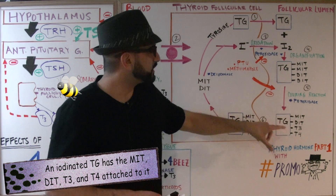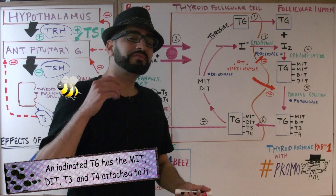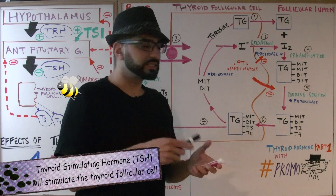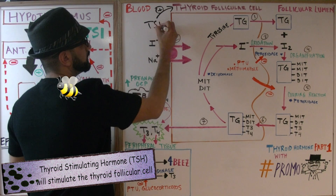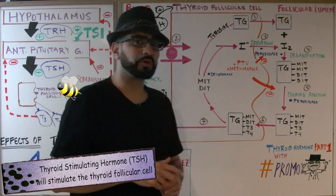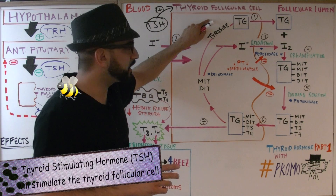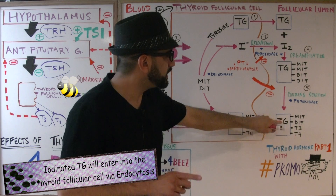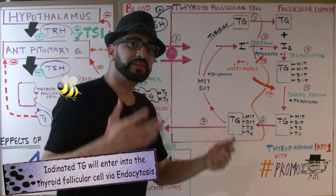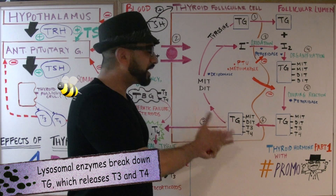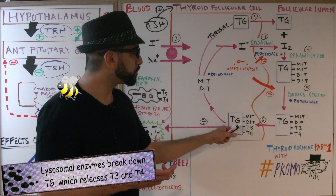All of this is happening in the follicular lumen. This is referred to as iodinated thyroglobulin, and it's going to stay in the follicular lumen until an important signal is received — stimulation by TSH, thyroid stimulating hormone. Only then does this iodinated thyroglobulin come into the thyroid follicular cell via endocytosis.